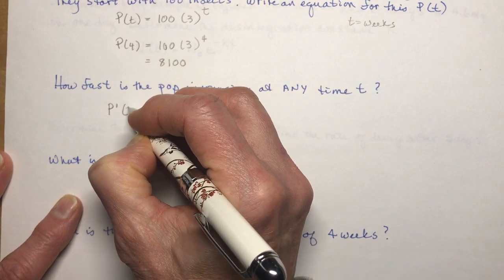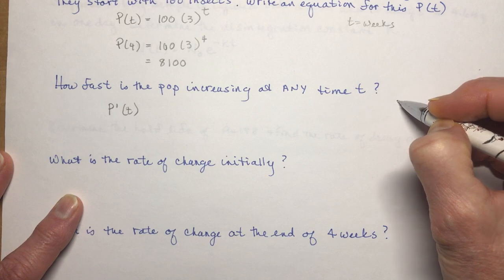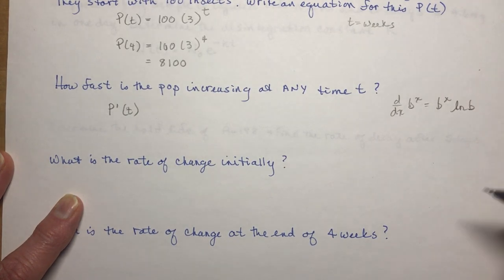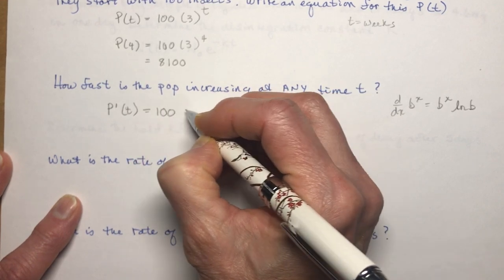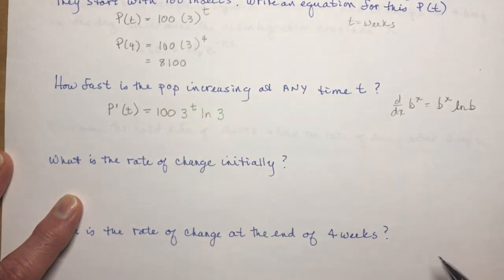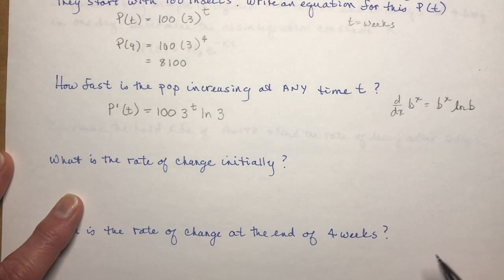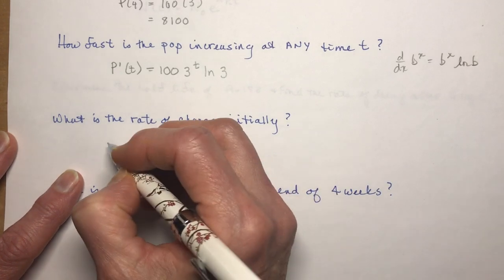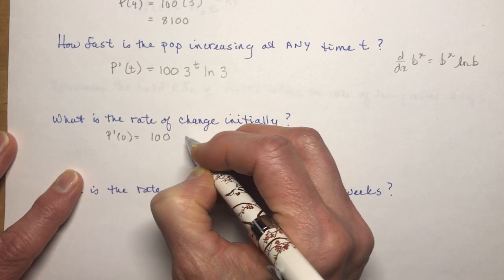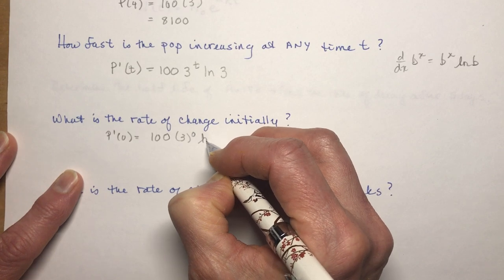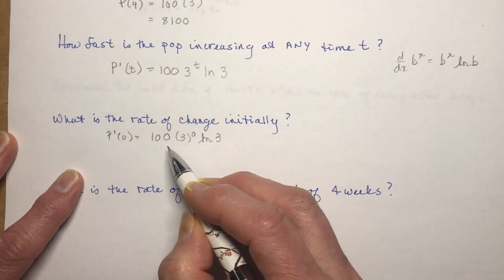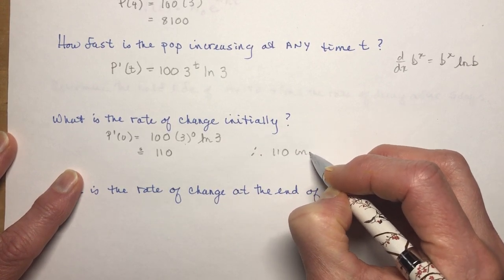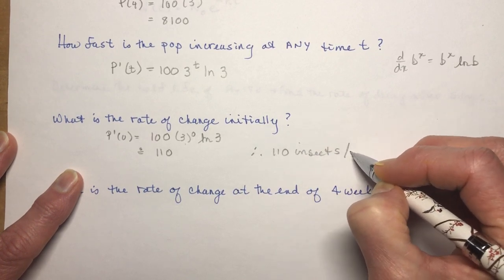The derivative of B to the X is B to the X times ln(B). So P'(T) = 100 times 3 to the T times ln(3). What is the original rate of change? That's P'(0) = 100 times 3 to the 0 times ln(3). Since 3 to the 0 is 1, we get 100 times ln(3) ≈ 110 insects per week. Remember to include units for word problems.